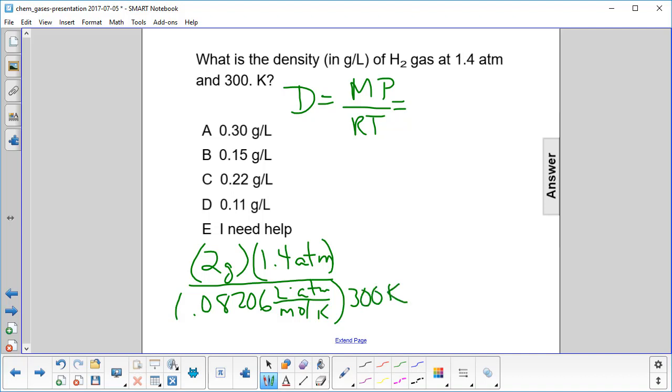We cancel out units, and what we get is 0.11 grams per liter, D.